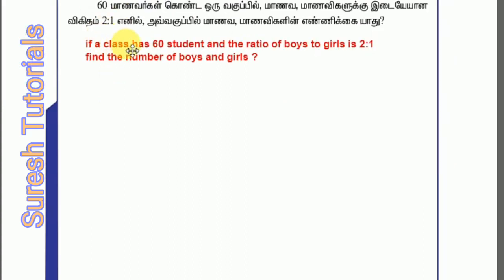If a class has 60 students, the ratio of boys to girls is 2 is to 1. Find the number of boys and girls. We will find out the number of boys and girls. So we have a total of 60 students. So what is the total parts? We will find out the total parts.